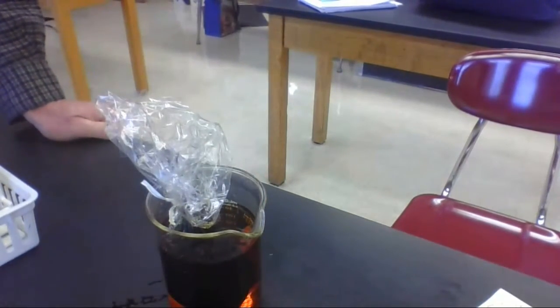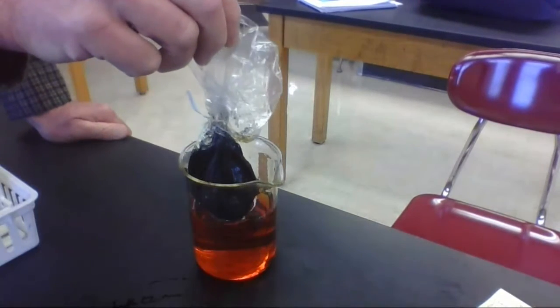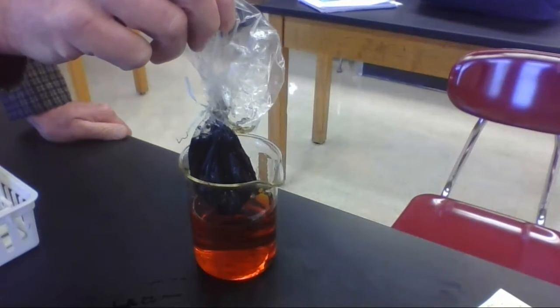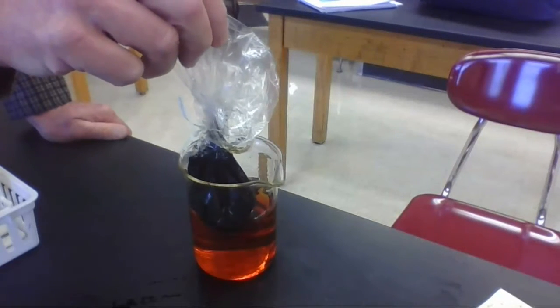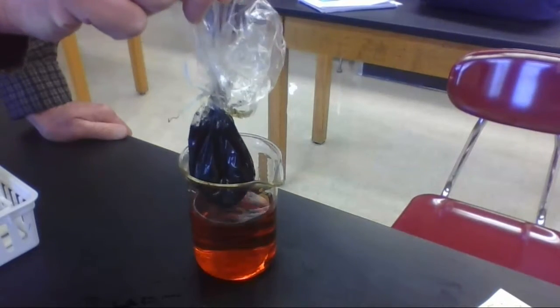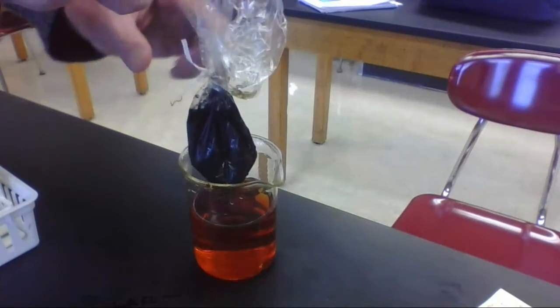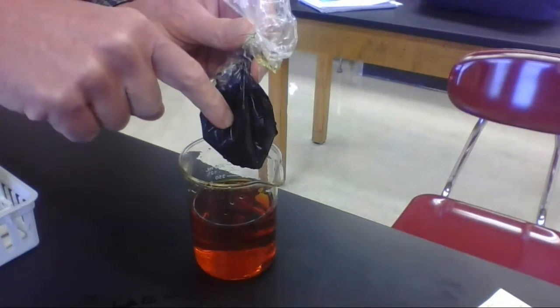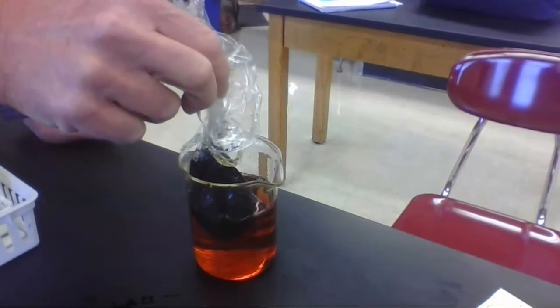From that information, can you explain, was the bag permeable to anything? In other words, can anything get into or out of the baggie? Did iodine go from high concentration in the beaker here into the baggie? Or did starch that was in the baggie go from high concentration in the baggie out and get out into the solution?